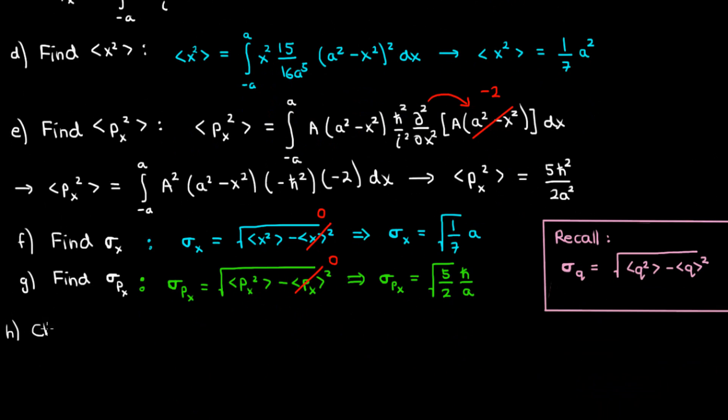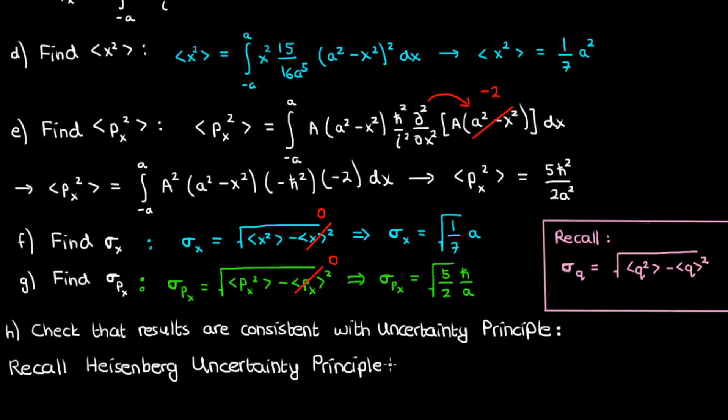That leaves part H, which asks us to verify the uncertainty principle holds. Recall the Heisenberg uncertainty principle: σₓσₚ ≥ ℏ/2. For this problem, the product of uncertainties is √(1/7a) × √(5/2)ℏ/a. Simplifying, this becomes √(5/14)ℏ. This is actually greater than ℏ/2 because √(5/14) ≈ 0.6, and 0.6ℏ > 0.5ℏ, which means the Heisenberg uncertainty principle is verified for this problem.